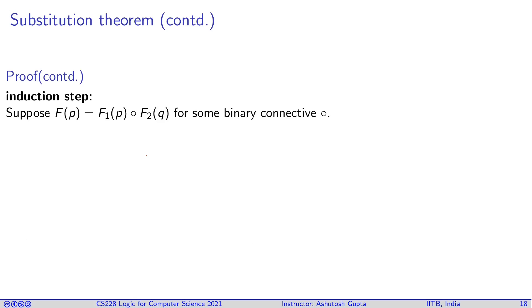The interesting situation is the induction step. Suppose you have a binary operator that created formula F, where F = F₁(p) ∘ F₂(p) for some binary connective ∘. By induction hypothesis, we can say that m satisfies F₁(G) if and only if m satisfies F₁(H). Similarly, m satisfies F₂(G) if and only if m satisfies F₂(H). Now we want to show the same thing holds for F.